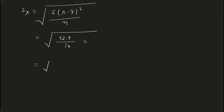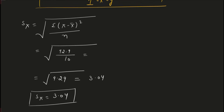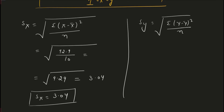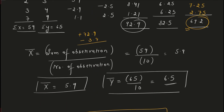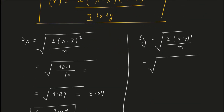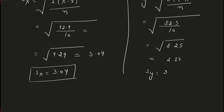92.9 divided by 10 = under root of 9.29, and when you take the square root, you get 3.04. So sx, the standard deviation of X, is 3.04. Similarly for sy: the formula is square root of [summation of (y minus ȳ)² divided by n]. Note: in Pearson's method, we use n (not n minus 1) when calculating standard deviation. The summation of (y minus ȳ)² was 82.5, so 82.5 divided by 10 = root of 8.25 = 2.87. So sy = 2.87.